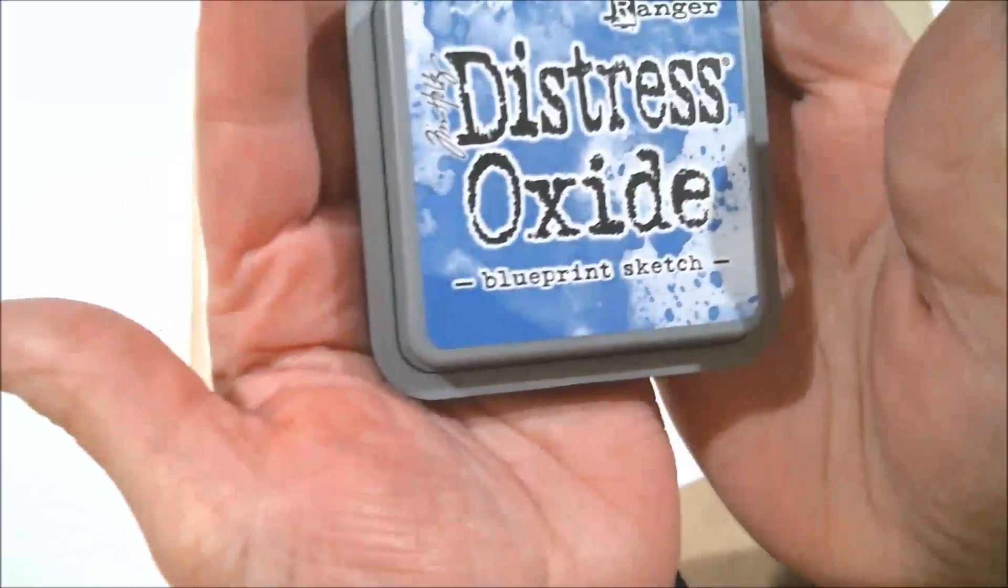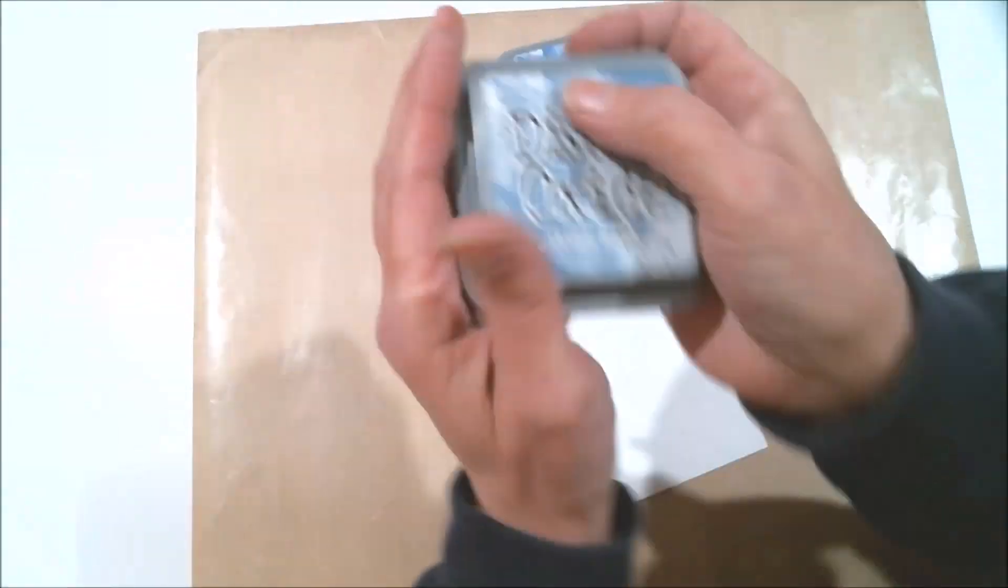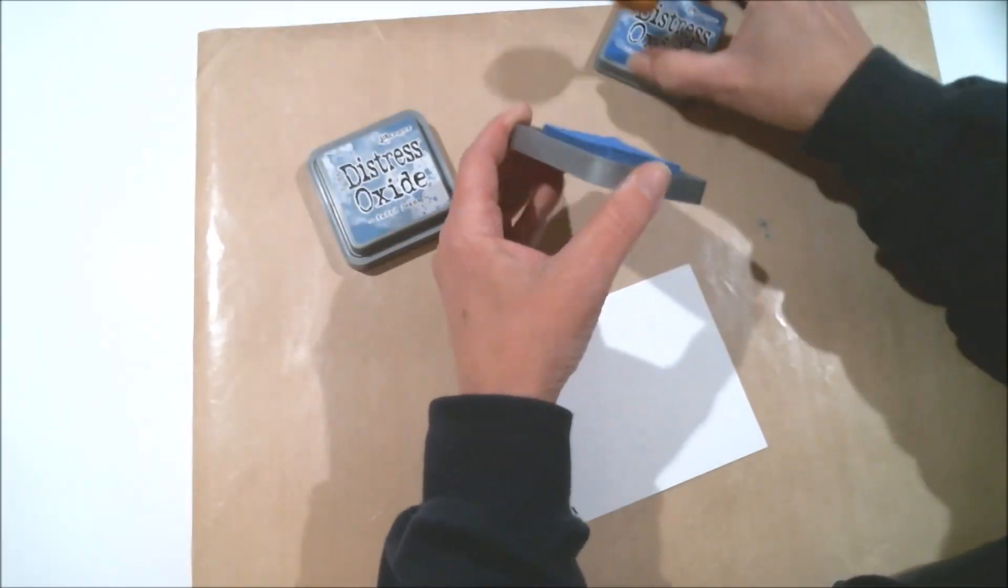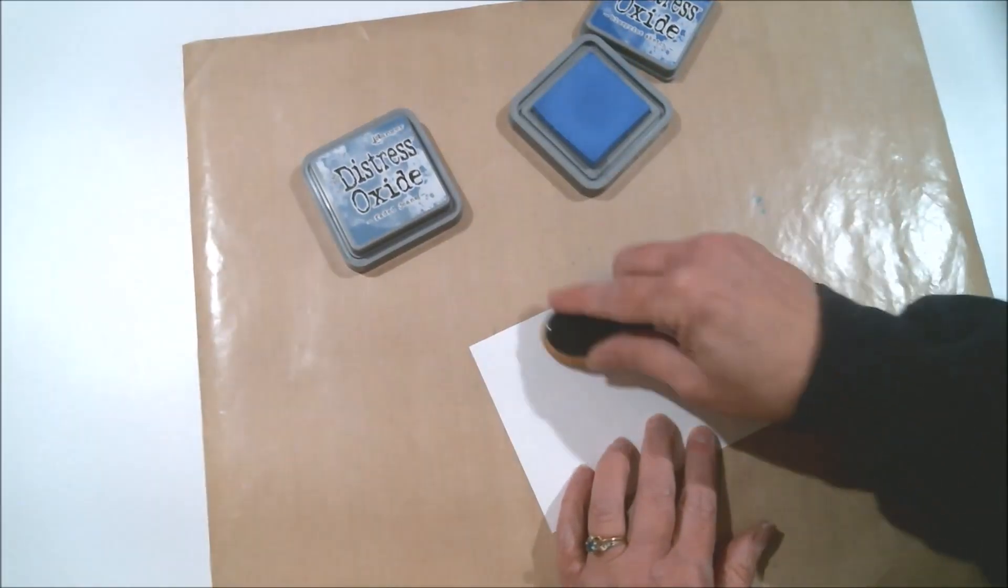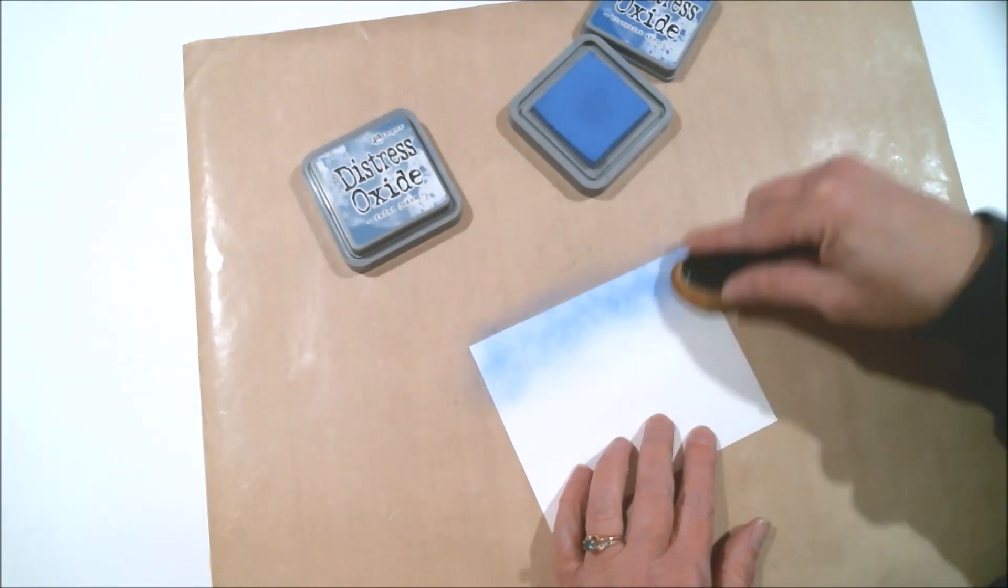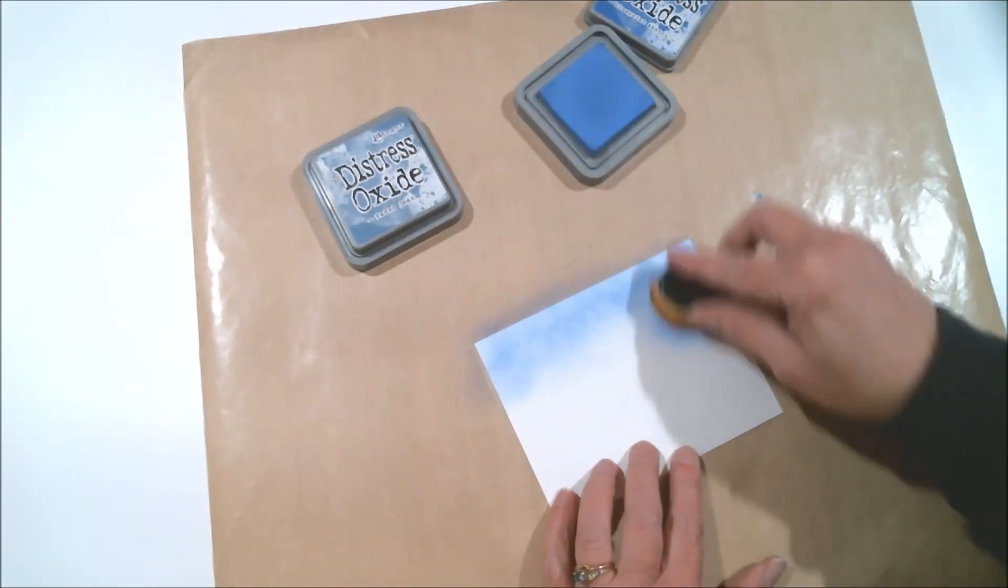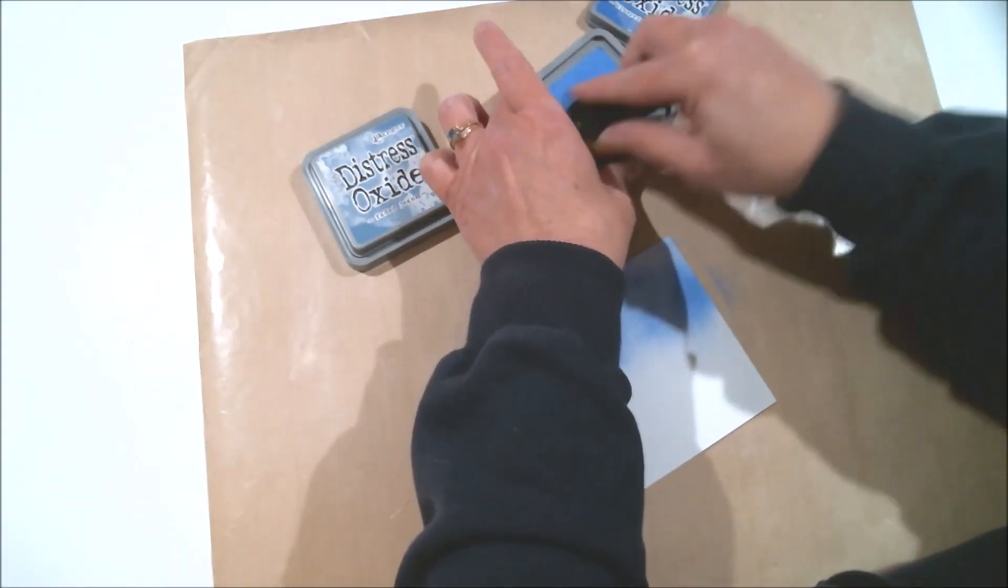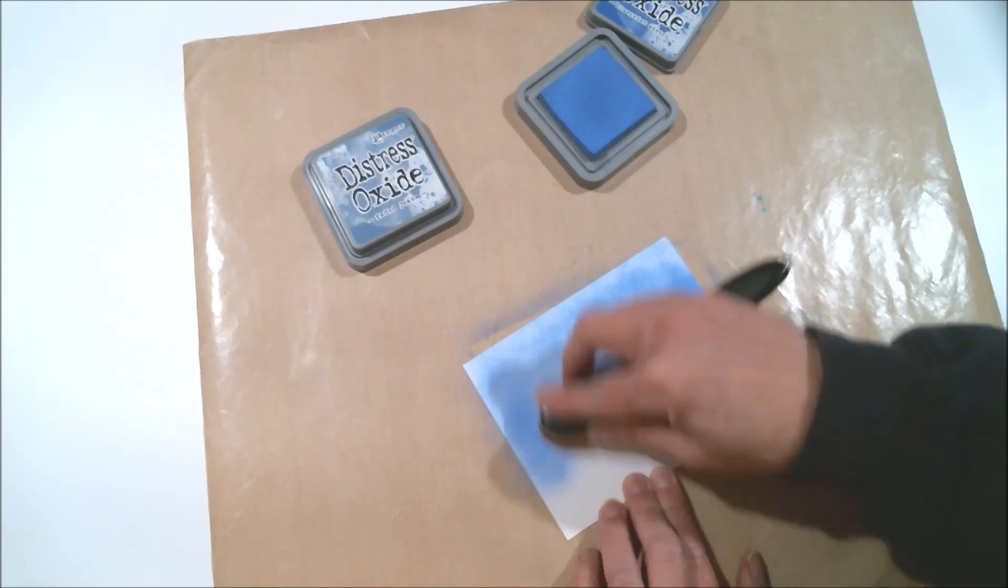This is the first card I'm making today, so let's get started. The first thing I'm going to do is create an evening sky background with Distress Oxide inks and then add some northern lights to it. When I get to that point, you'll notice that I probably should have made the northern lights a little bit brighter because they're going to get hidden behind the next step.